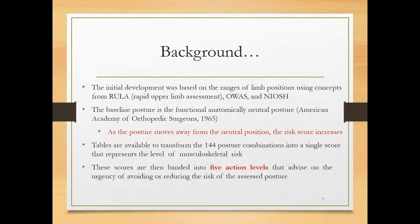The basic idea in assigning scores to posture is the same as in the RULA method: as the posture moves away from the neutral position, the risk score increases. The more the deviation from the neutral posture, the higher will be the risk and the higher will be the score. In RULA we had 4 action levels; in REBA we will have 5 action levels.